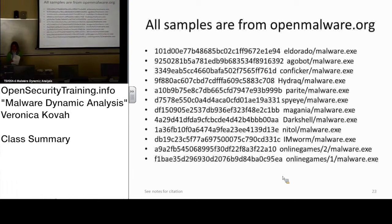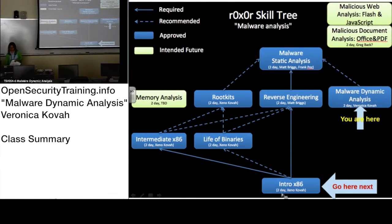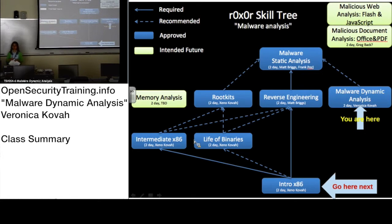You can download malware samples from openmalware.org individually — there are more than a million samples there. And now, where you are in the course roadmap — you are here. I should update this: it used to say two days but there's no way you can cover all this material in two days. That's why we now have this as a three-day course. If you are really interested in malware analysis, please take this intro — it's available free at OpenSecurityTraining.info. You can later take other courses on reverse engineering and malware static analysis to go deeper.